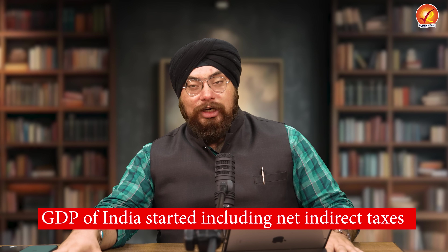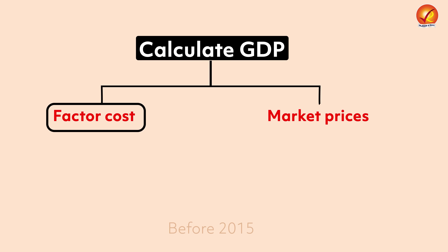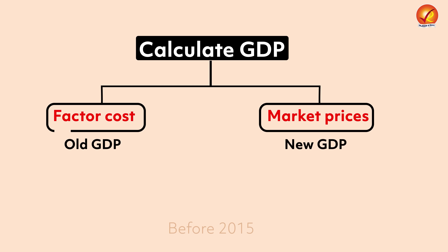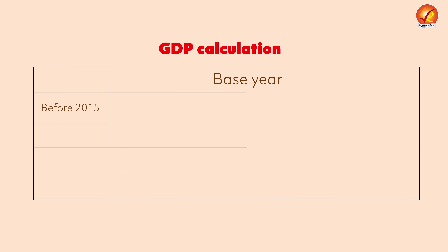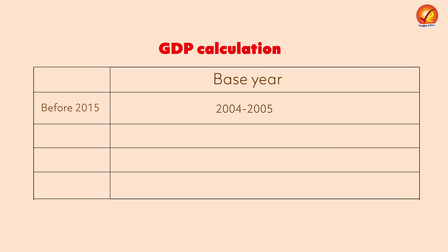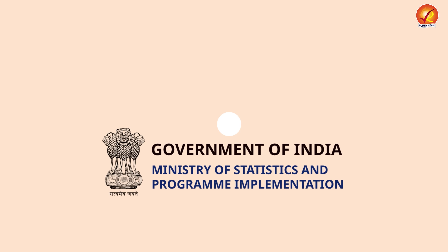Before 2015, the GDP series was known as the old GDP series, and now it is the new GDP series. The second major change was in the base year itself: before 2015, the base year for GDP calculation was 2004-2005, but in 2015 it was changed to 2011-2012. From 2015, that base year continued right up to 2025. But now we will change the base year to 2022-2023 — that is the historic change announced by the Ministry of Statistics and Programme Implementation.